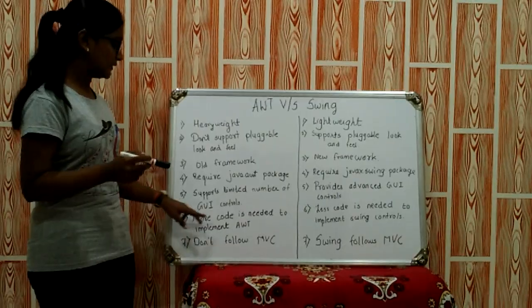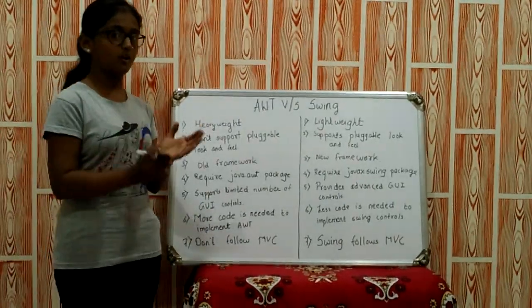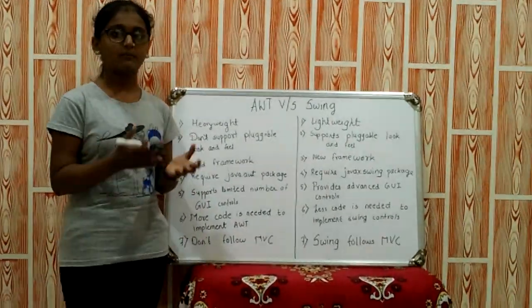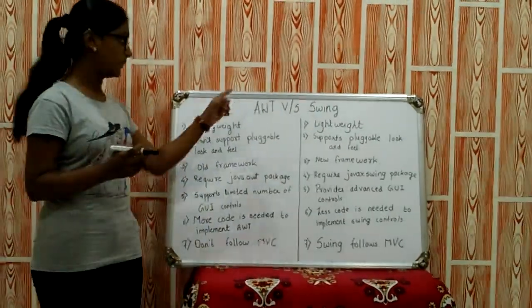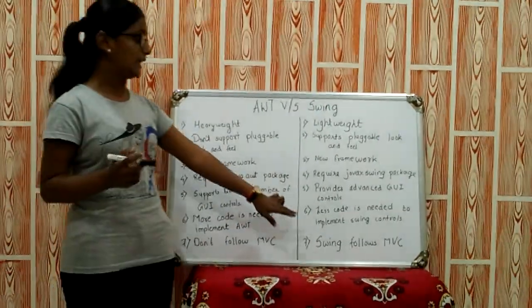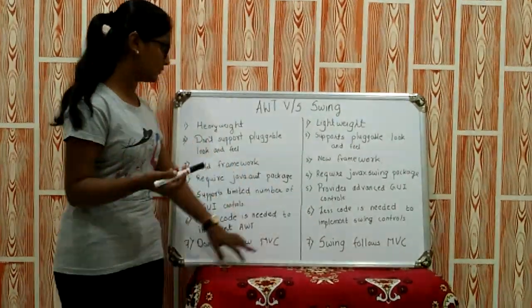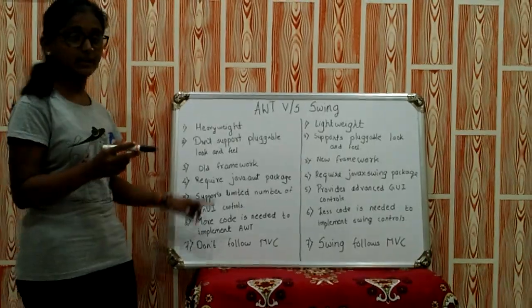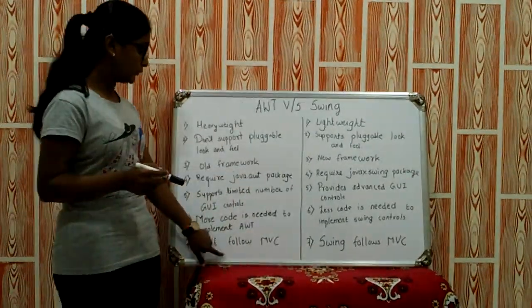Now moving towards the sixth difference: more code is needed for AWT controls. While doing the program you will understand that more code is required for AWT, while less code is needed to implement Swing controls.